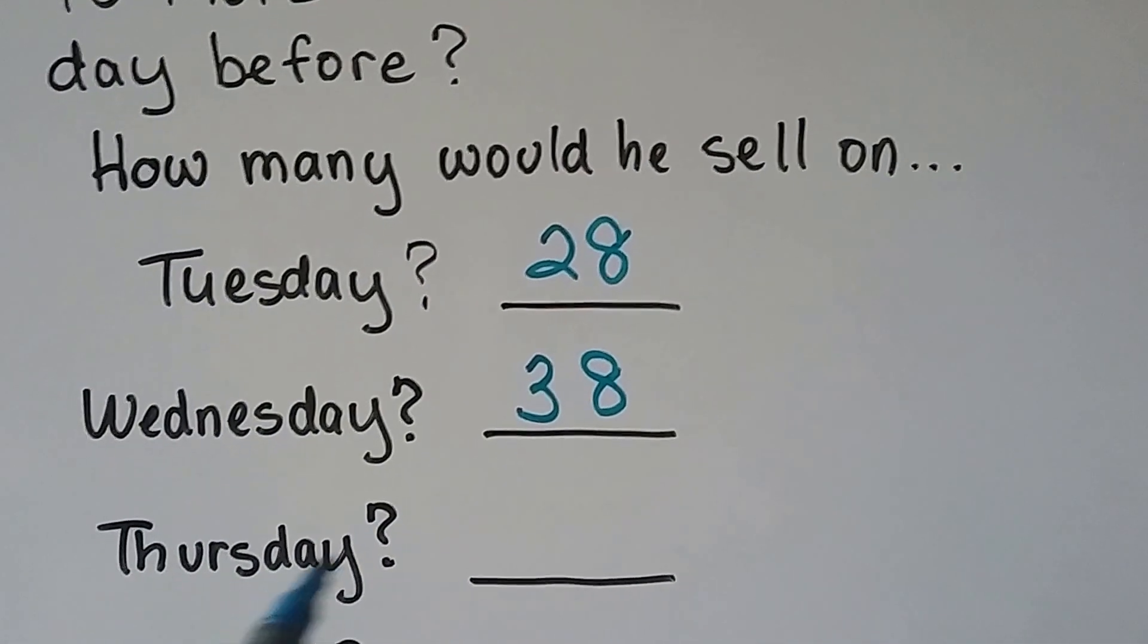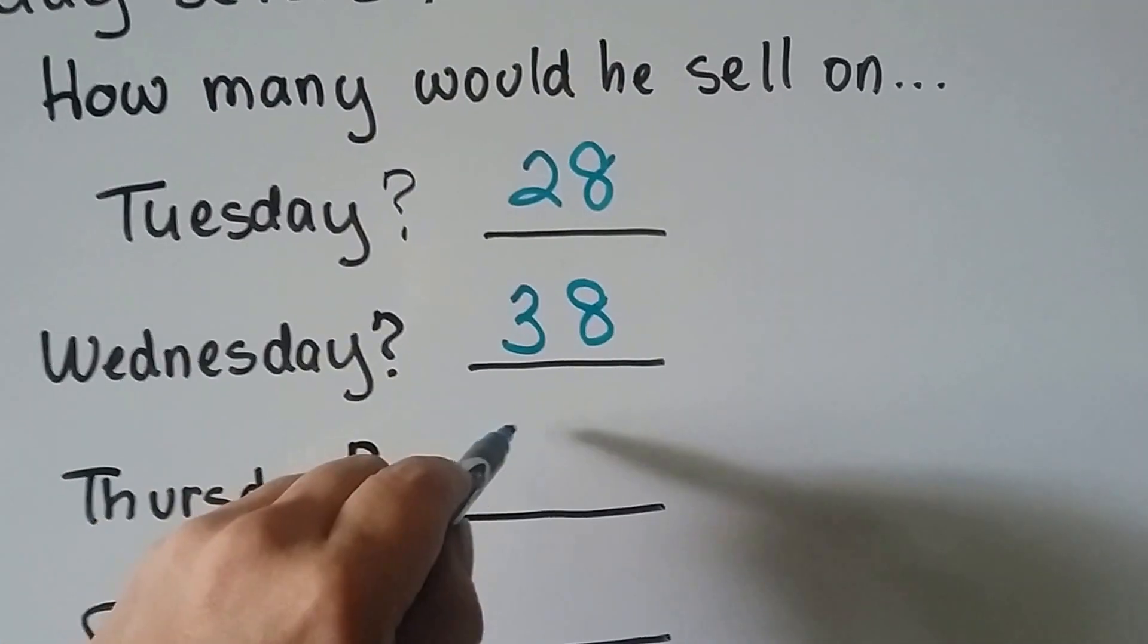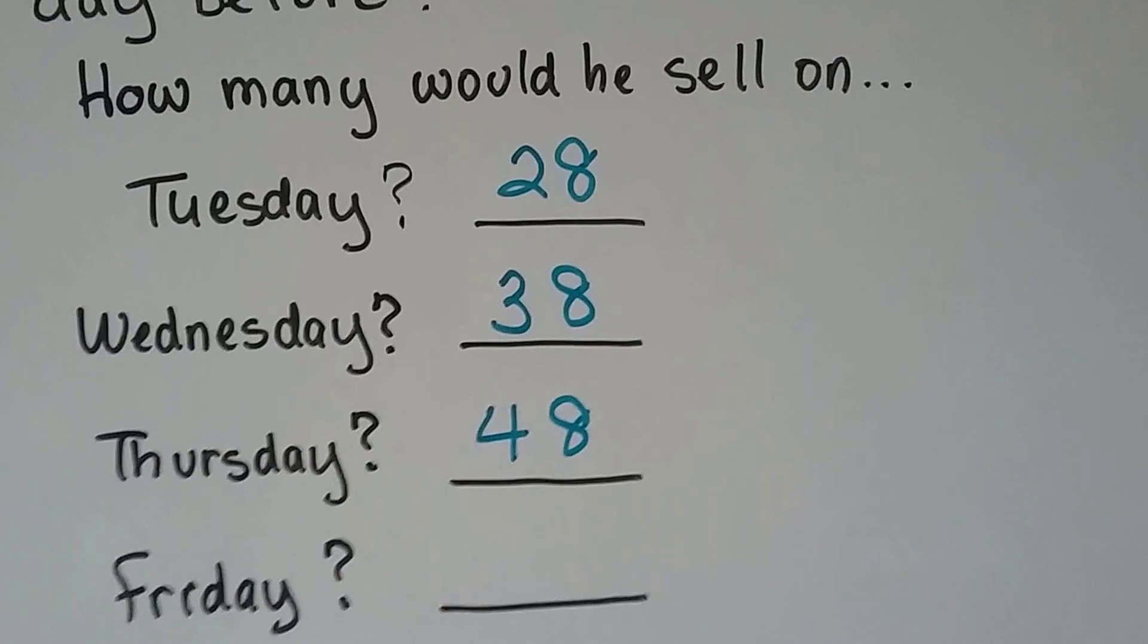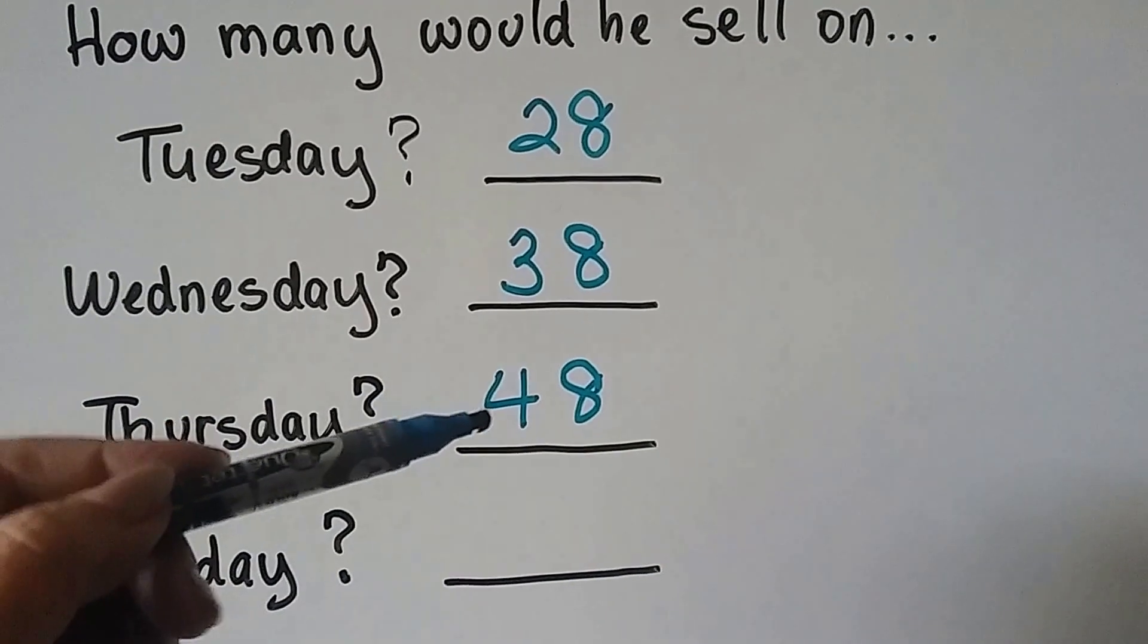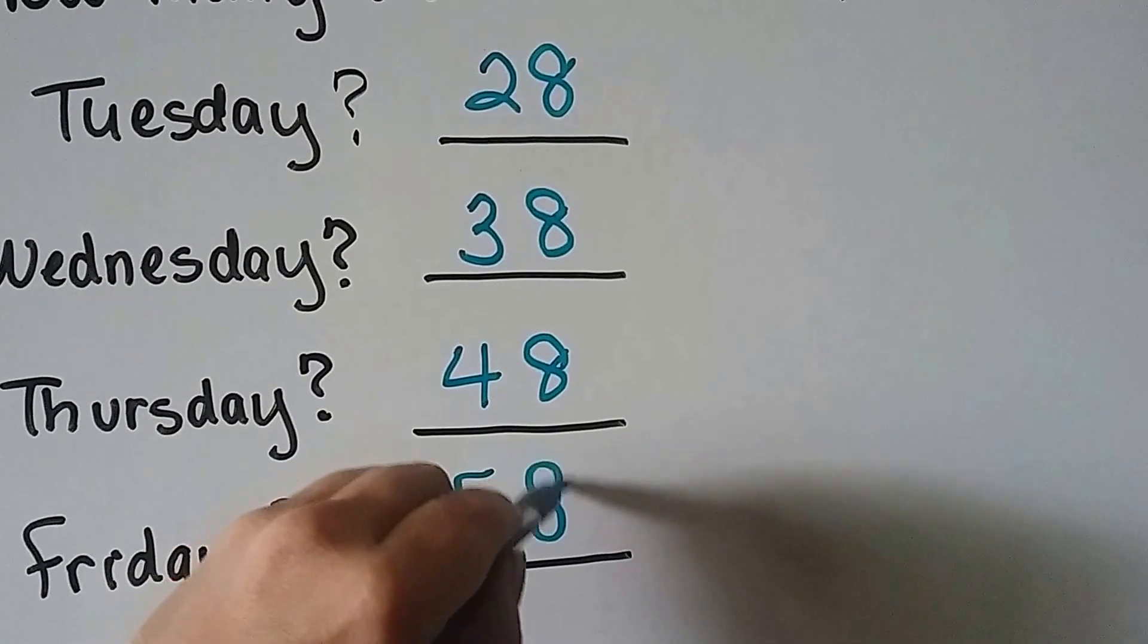If there was 10 more on Thursday than Wednesday, two, three, now we'd have 48. See? And if he sold 10 more on Friday than on Thursday, we would add another 10, and he would sell 58.